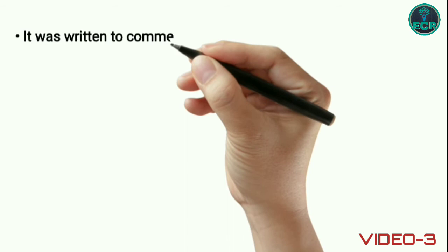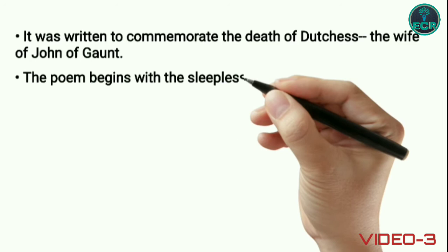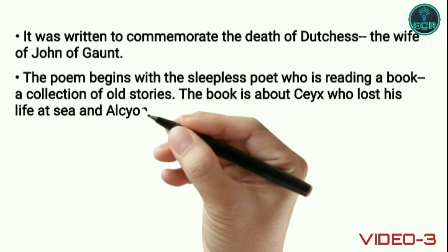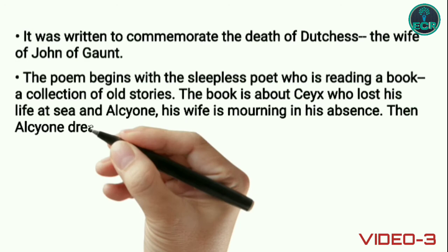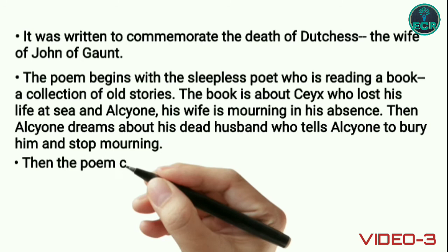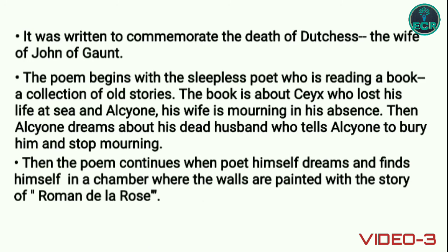It was written to commemorate the death of Blanche, the wife of John of Gaunt. The poem begins with the sleepless poet who is reading a book, a collection of old stories about Ceyx, who lost his life at sea, and Alcyone, his wife, who is mourning in his absence. Then Alcyone dreams about her dead husband, who tells her to bury him and stop mourning. Then the poem continues when the poet himself dreams and finds himself in a chamber where the walls are painted with the story of the Roman de la Rose.